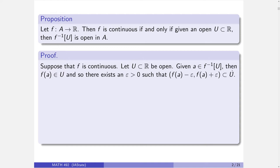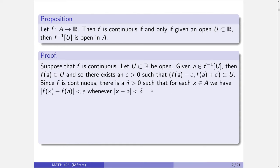Let's take an element that lives in the inverse image of U. What does that mean? That means the output lives in U — this set is precisely the inputs whose outputs live in the set. The set I have is open, and since I live in it, that means I can find an epsilon so that the interval remains within the set. Note my hypothesis is an open subset of the reals, so there is no intersection with the reals — that's a subset of the reals, so the intersection doesn't do anything.